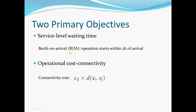A vessel is considered on-time upon arrival if its operation starts within two hours of arrival. For the operational cost, our objective is to minimize it. Here c_ij represents the number of containers to be transferred from vessel i to vessel j, and the distance function d represents the distance between vessel i and vessel j.